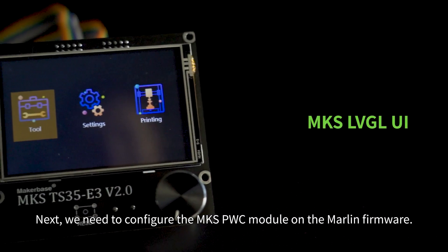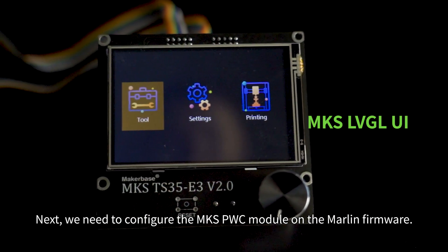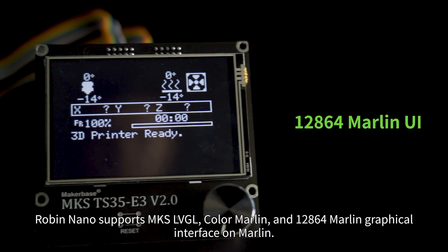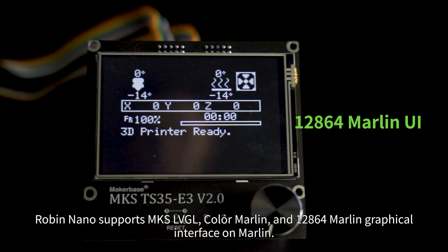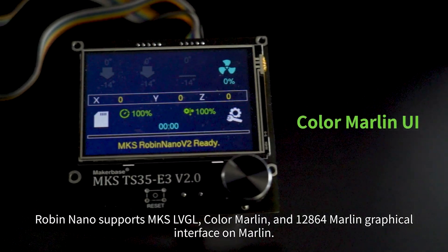Next, we need to configure the MKS-PWC module on the Marlin firmware. Robin Nano supports MKS-LVGL, Color Marlin, and 128x64 Marlin graphical interface on Marlin.